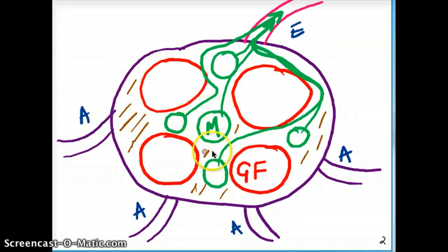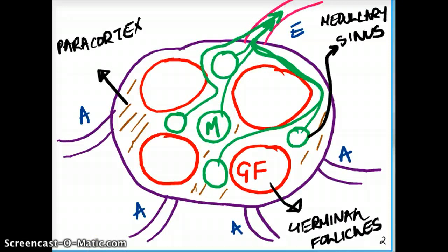So we can say that the germinal follicles is where the B cells live. The paracortex is where the T cells live. And the medulla is where we have the macrophages, which communicates with our efferent from our lymph node. Now, this is the basic premise of a lymph node.